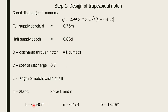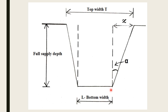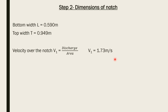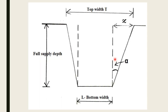Solving the two equations gives: bottom width L = 0.59 m, n = 0.479, and angle alpha = 13.49 degrees. These parameters can be marked on the cross-section figure. Knowing alpha and x — the side projection — along with the bottom width, the top width T can then be calculated.